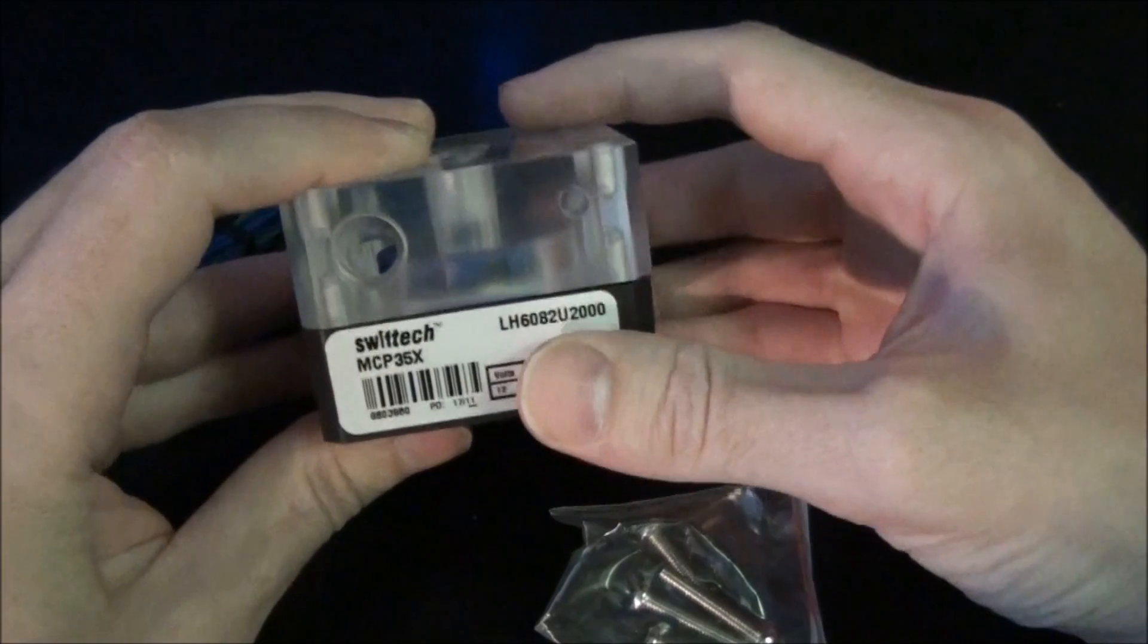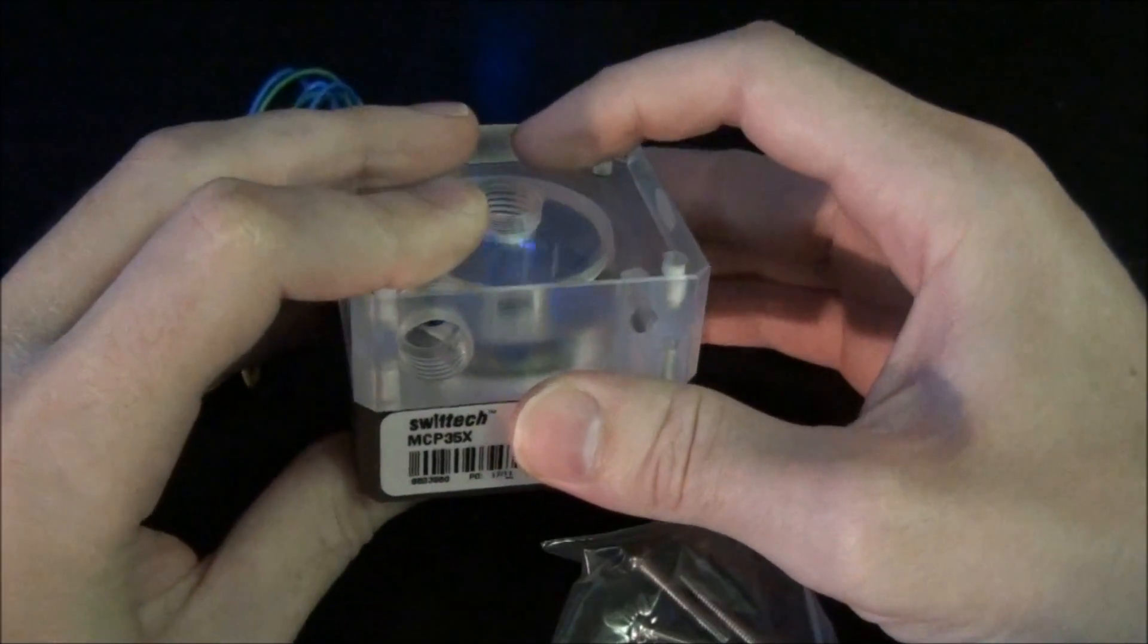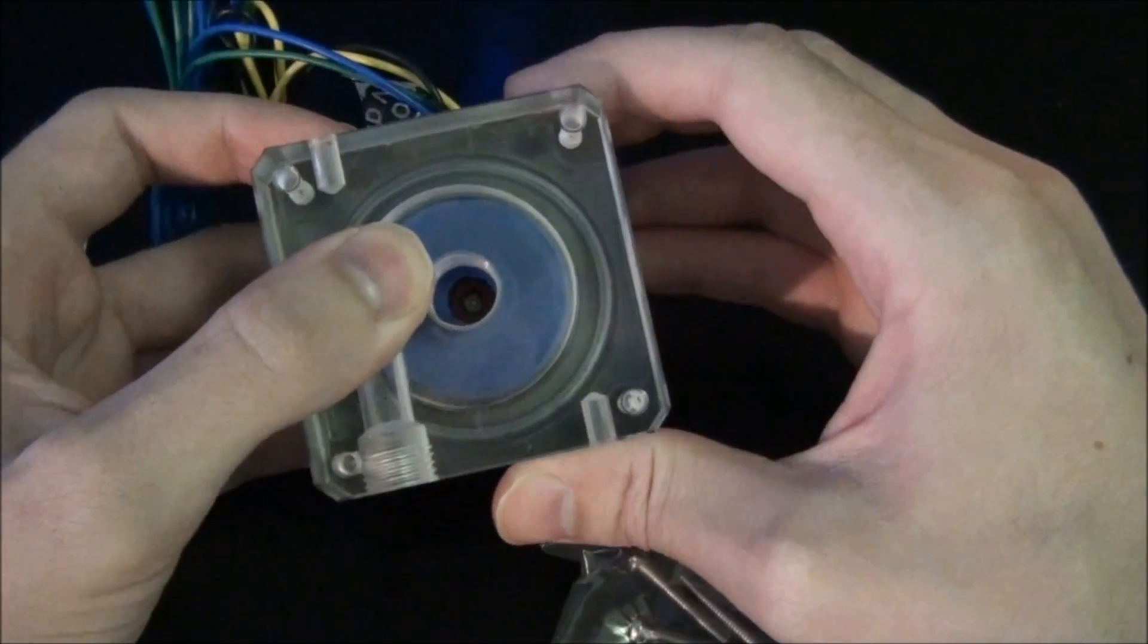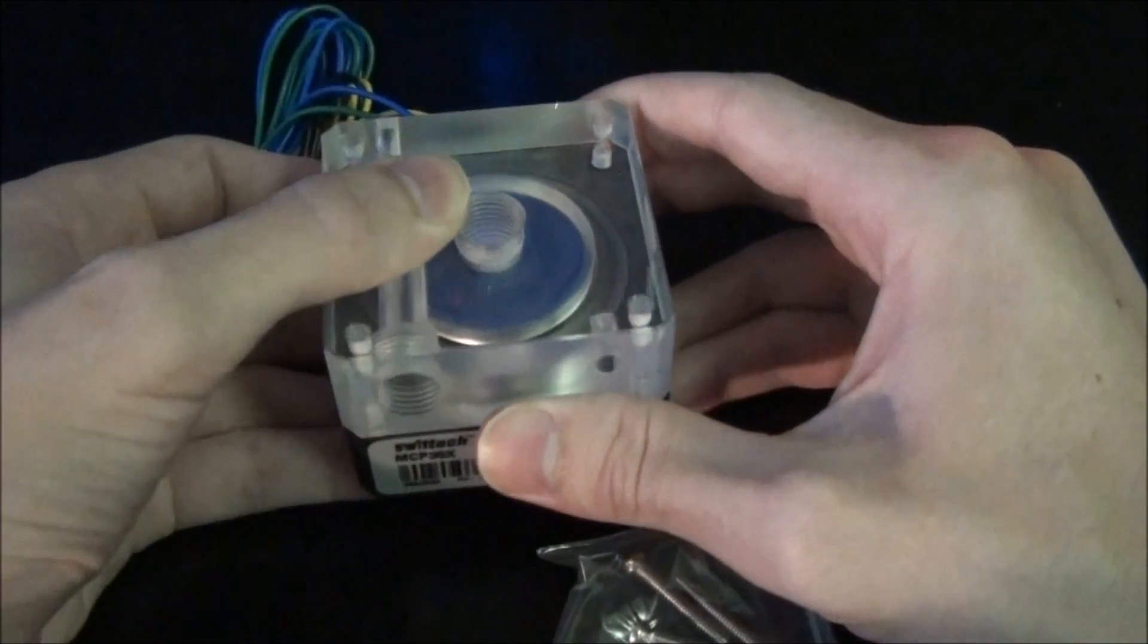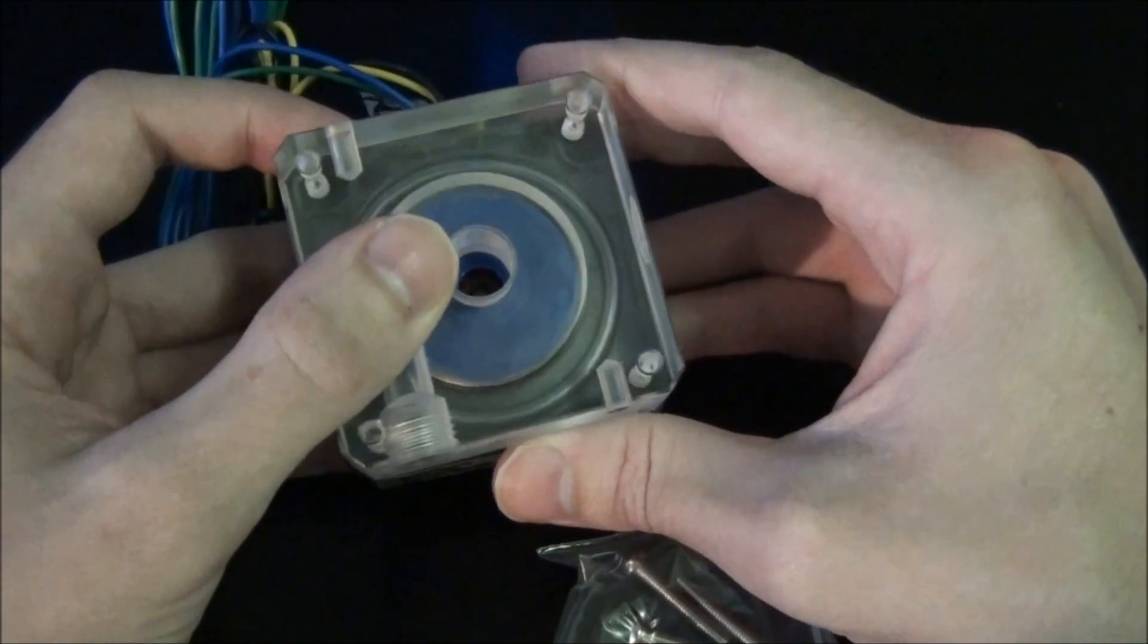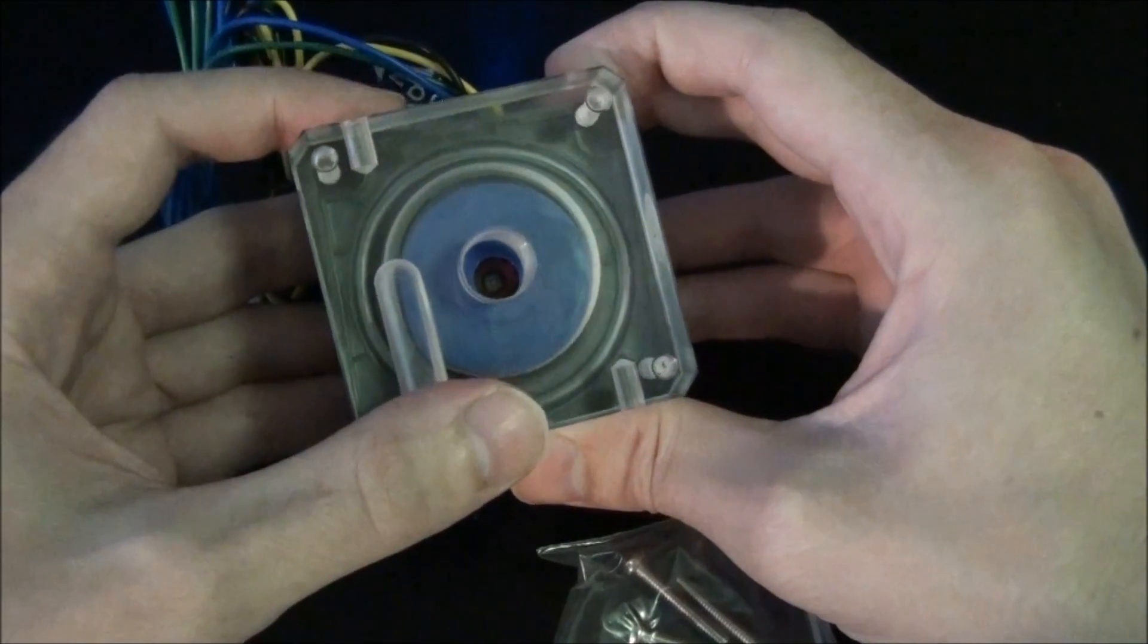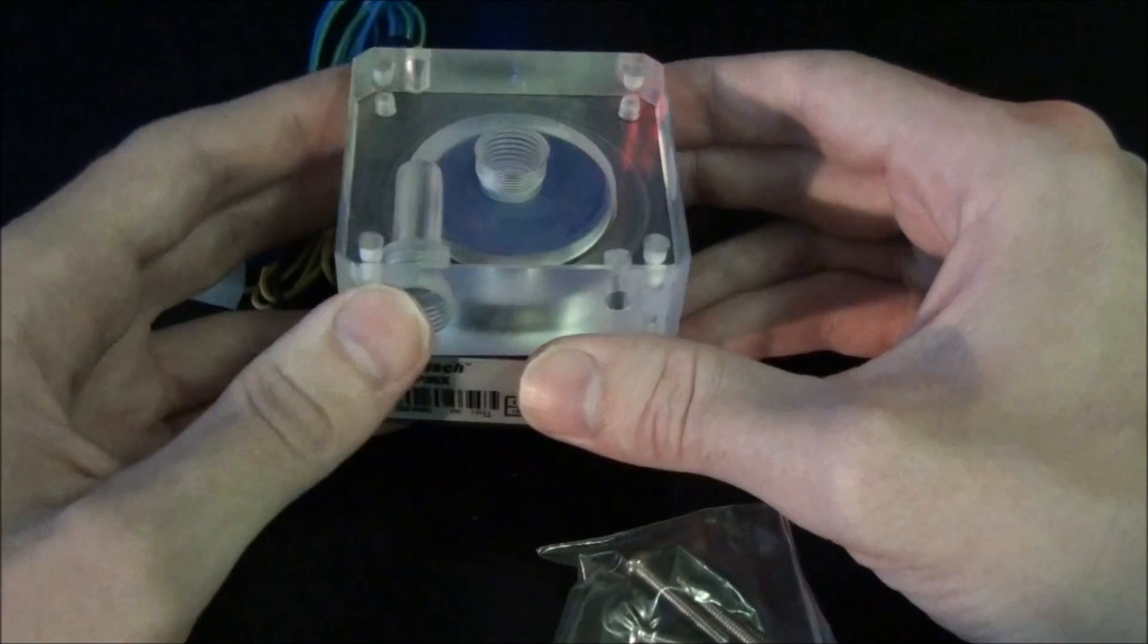Make sure you keep pressure on the pump and the pump top. Hold them together. Otherwise the o-ring might slip out of position. And if that's the case, you'll end up splitting the o-ring, squashing it in the wrong place and you'll get leaks. And then you also may not be able to use it again.